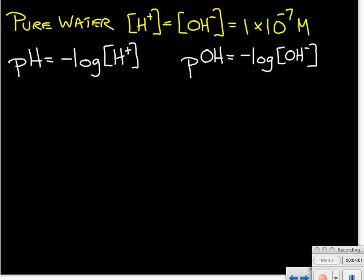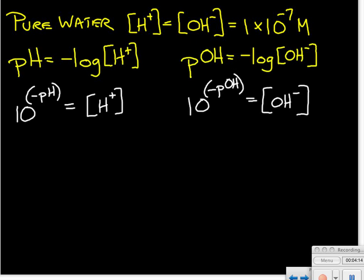Be aware that you can also go in the other direction. You can calculate the concentration of the hydrogen ion if you know the pH: take 10 raised to the power of the negative pH, and that gives you the concentration of the hydrogen ion. Similarly, if you take 10 raised to the power of the negative pOH, that gives you the concentration of the hydroxide ion.